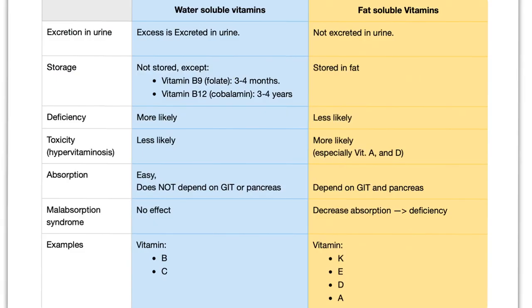Now let's compare between water-soluble vitamins and fat-soluble vitamins. Water-soluble vitamins, they are water-soluble therefore the excess is excreted in the urine. Makes sense. But the fat-soluble vitamins are not excreted in the urine.